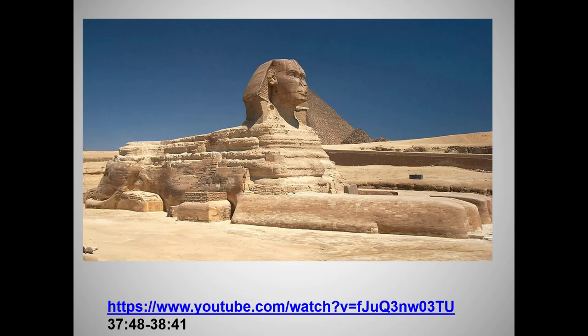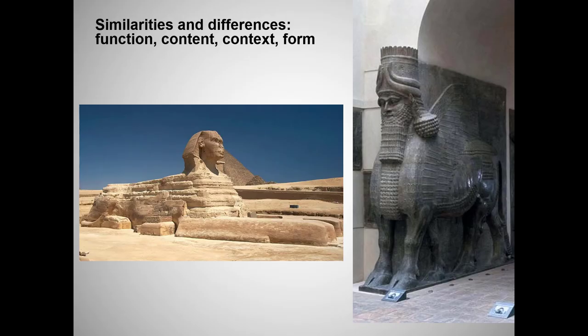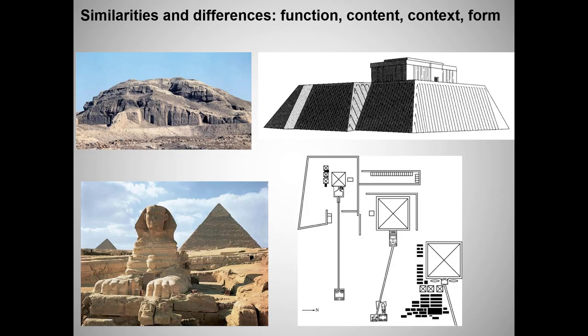Finally, we get to the weirdest and, to my mind, most wonderful element in the complex: the Sphinx. If you have time, today's lesson offers two excellent candidates for comparative analysis. How do the Sphinx and the Lamassu compare in terms of function, content, context, and form? And what about the ziggurat topped with a temple versus the Great Pyramids? In my next lecture, we will fast forward to the New Kingdom and move from pyramids to...